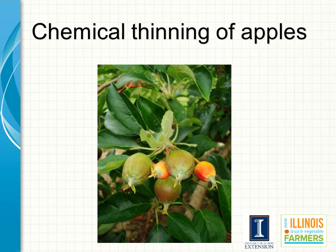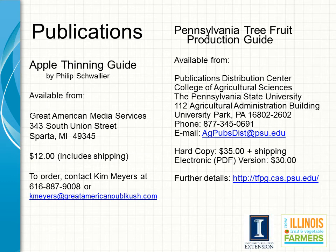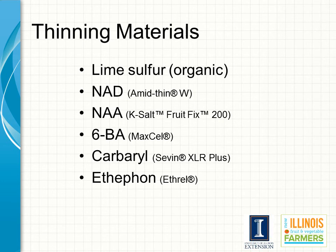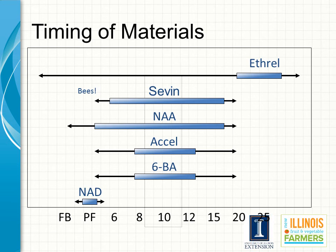Apples are the most responsive to chemical thinners, whereas other fruit crops rely mostly on mechanical means to thin. There is not just one recipe for chemical thinning because too many factors influence the tree's reaction. For organic apple growers, liquid lime sulfur is an available option; the other thinning agents listed are not accepted for organic certification. Each thinning agent has an optimal application window, and most chemical thinning is done between petal fall and 15mm fruit size.